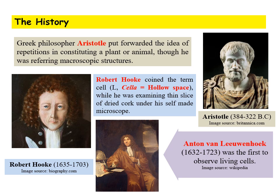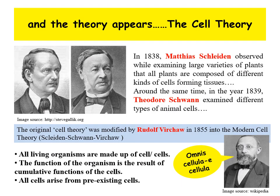It was Anton van Leeuwenhoek who succeeded in observing living cells for the first time with his upgraded version of the microscope. Leeuwenhoek was the first person to describe the sperm cells of humans, blood cells, and muscle cells out of his curiosity. Thereafter, many path-breaking developments occurred in the field of cell biology. Robert Brown discovered the nucleus, and the cell theory came into existence.